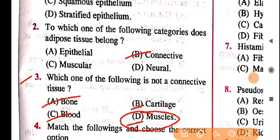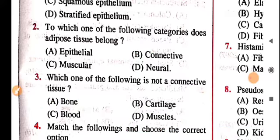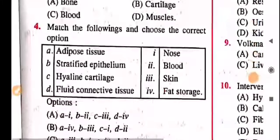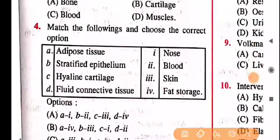Question 3: which one of the following is not connective tissue? The options are bone, cartilage, blood, and muscles. The answer is muscles — muscles are not connective tissue, while bone, cartilage, and blood are all connective tissues.